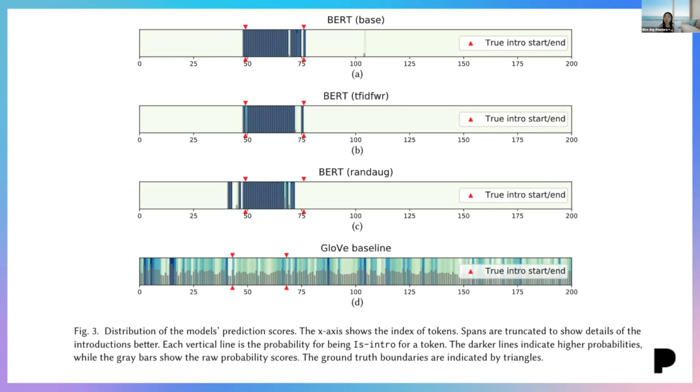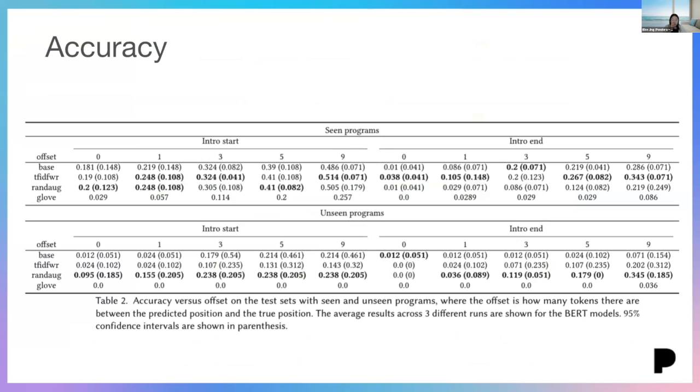And next, I will go through the results of our work. And this plot gives us a general idea of the model's performance. In these plots, each vertical line represents a token, where the dark lines are the tokens that the model considered to have a high probability of being in the intro, and the lighter lines have a lower probability. And we find that for the base BERT model, as well as the data augmentation models, the models are able to identify blocks of tokens that align well with the ground truth. While the baseline finds high probability tokens throughout the text, and it's not able to find a consistent block.